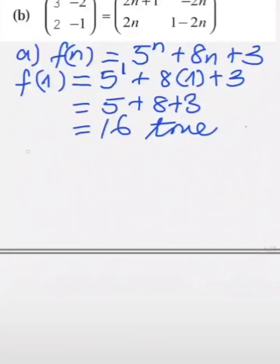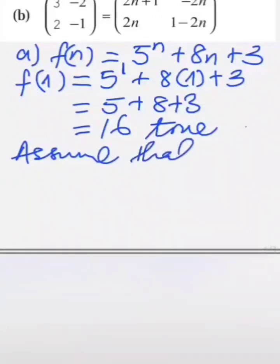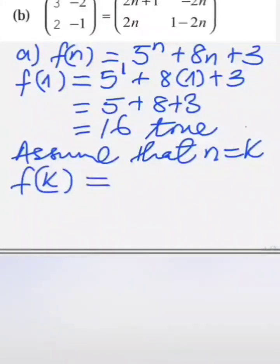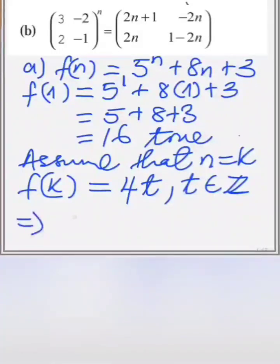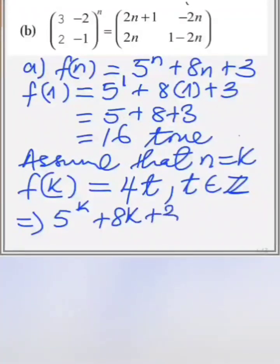In the hypothesis step we're going to assume that f of k is true. So we assume that n equals k would be true. f of k should be equal to a multiple of 4, so we can call it 4t where t is an element of z, the set of integers. So f of k, obtained by replacing every n by k in the statement, gives us 5 to the k plus 8k plus 3 equals 4t, and that is equation 1.